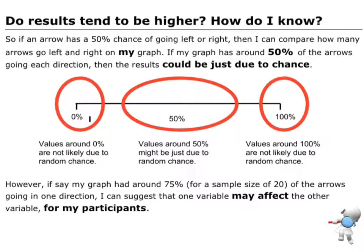If I take an arrow, an arrow has got a 50% chance of going in that direction and 50% chance of going in that direction, just by chance alone. Random chance could go either direction — 50-50. So it means that if my graph has about 50% of the arrows going left and 50% of them going right, then I could get results just due to random chance.